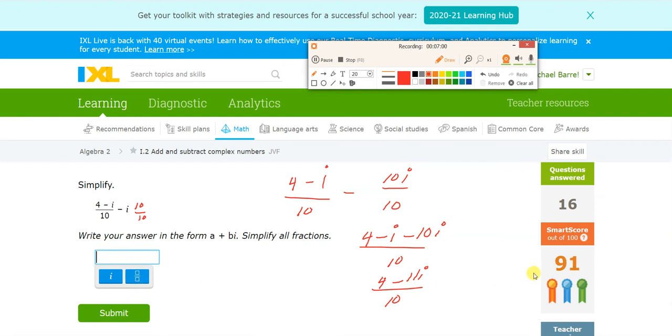And it does not want it that way. It wants it like this. It wants it as 4 over 10 minus 11i over 10, and this will have to simplify to two-fifths. Two-fifths.